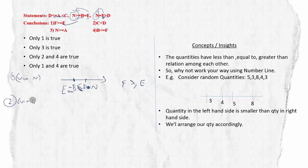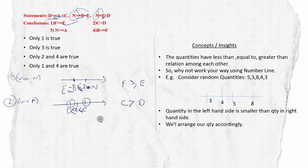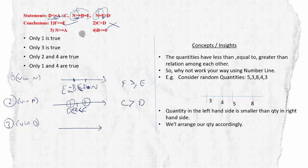Conclusion 2: Is C > D? A is less than C, so A is to the left of C. A ≥ D, so A is to the right of D. Therefore C is to the right of D — C is greater than D. There's no equal-to here so C > D. Conclusion 2 is true. Conclusion 3: Is N ≥ A? N is related to F and D; A is related to D. Via D: N equals F, F is greater than D, so D is to the left. A is greater than D too, but we don't know whether N or A comes first on the right — cannot be determined.